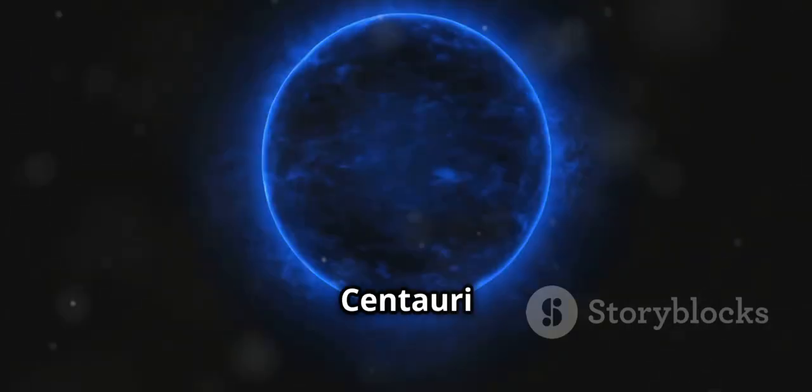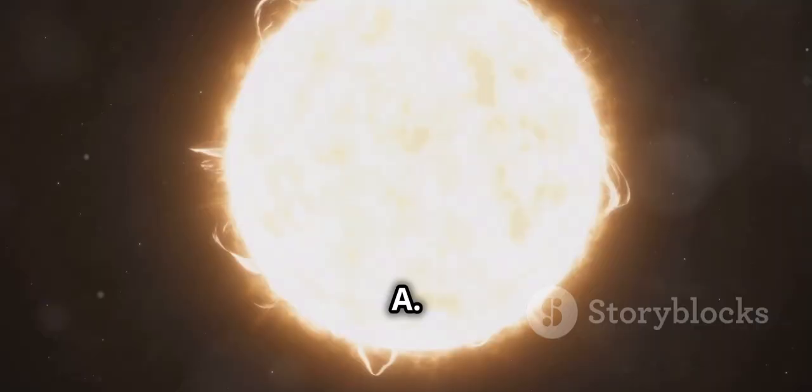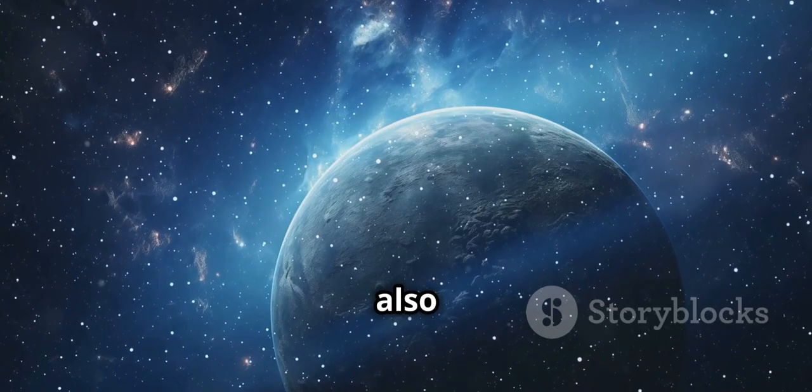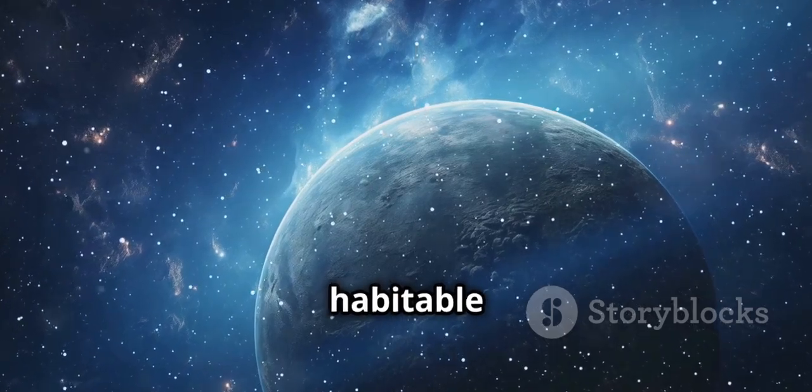Alpha Centauri B is a slightly smaller and cooler star than Alpha Centauri A. It's a K-type star, known for its orange hue. It also has some characteristics that make it an intriguing candidate for harboring habitable planets.